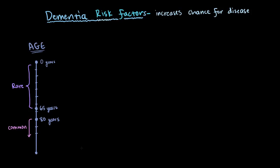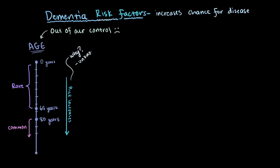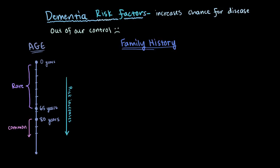Unfortunately for us, the fact that we age over time is a risk factor that's completely out of our control. Even more unfortunately, the reason as to why this risk of developing dementia increases as we get older is mostly unknown. And another risk factor that tends to be mostly out of our control is family history.